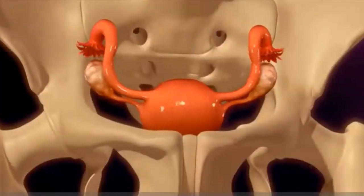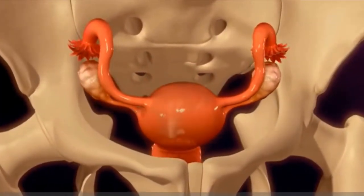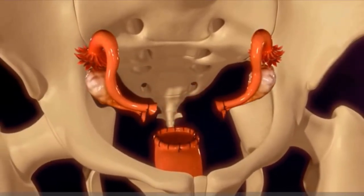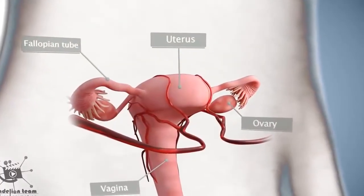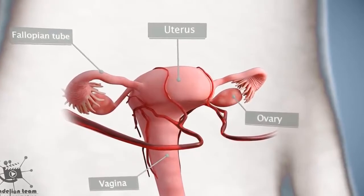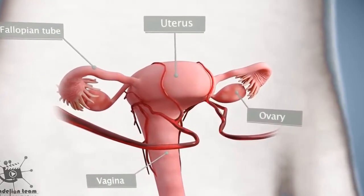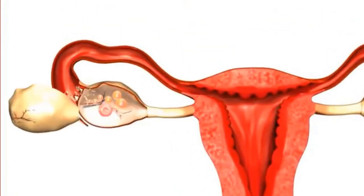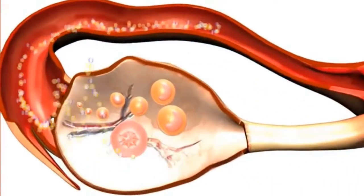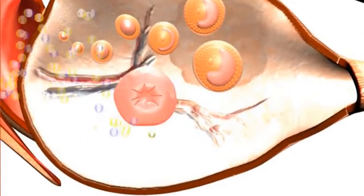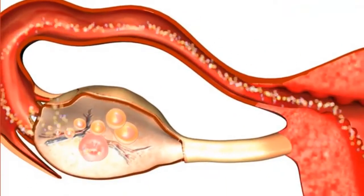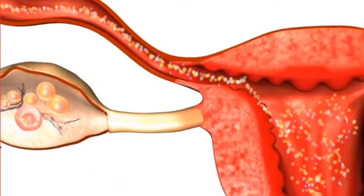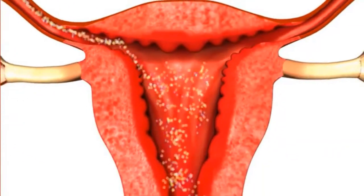A woman's reproductive system consists of an arrangement of organs that each month prepares itself for the possibility of creating a baby. It is made up of the ovaries, the fallopian tubes, the uterus, and the vagina. These all play a part in the menstrual cycle, which is centered around the release of an egg from the ovaries approximately every 28 days. Let's have a look inside the body to see what happens during this cycle.